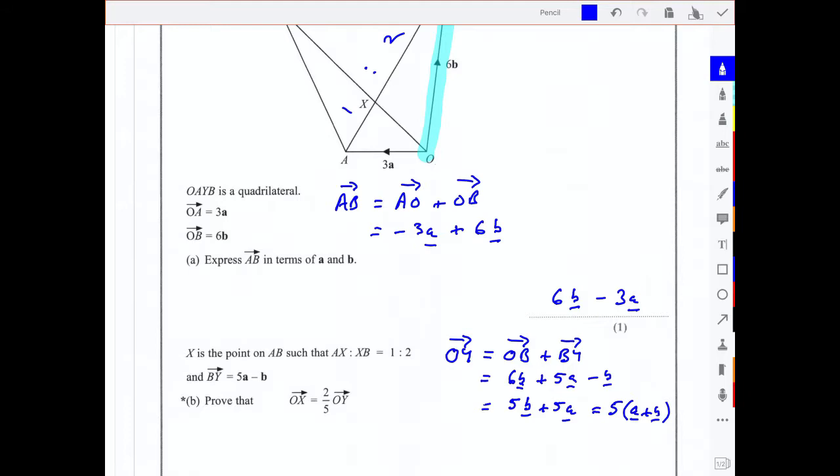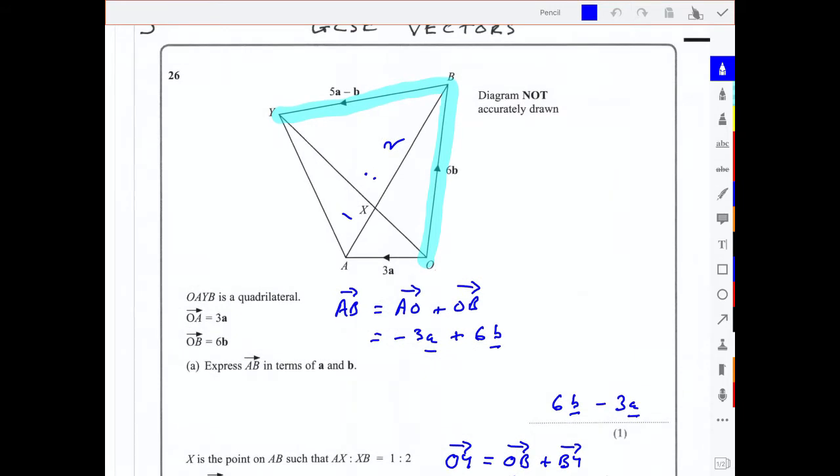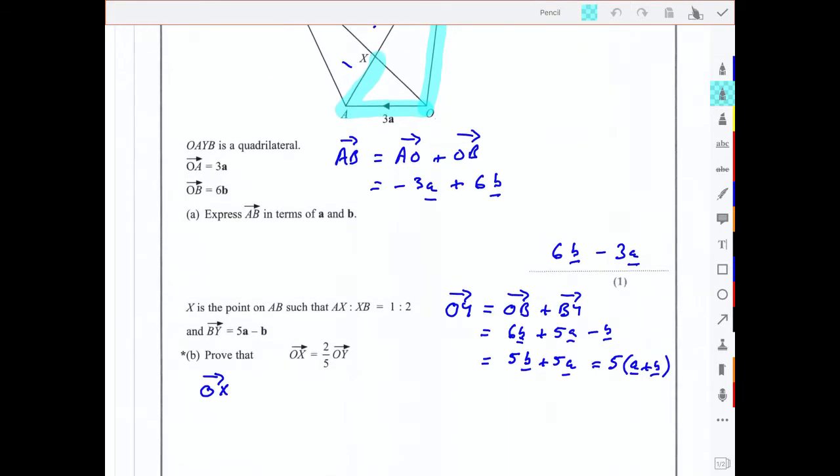Now I want an expression for OX. So can we get a route from O to X? Well O to X, we can come O to A and then A to X. So OX is equal to O to A plus A to X.